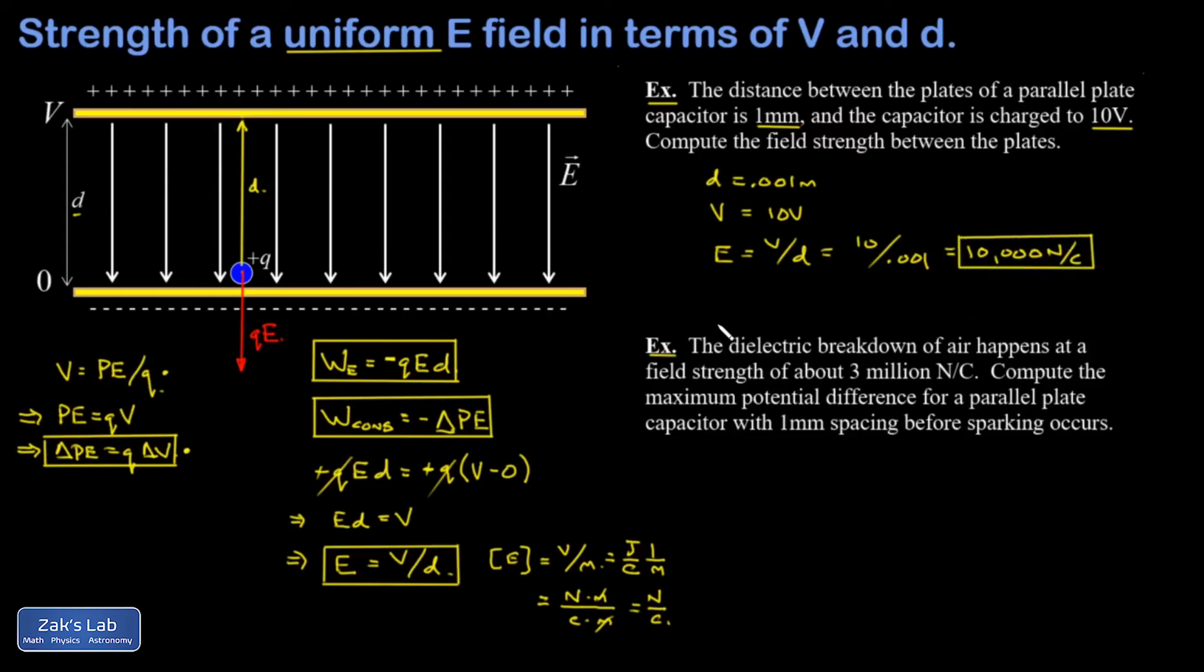The second problem turns the formula around, with interesting background. The dielectric breakdown of air happens at a field strength of about 3 million newtons per coulomb. This means if you subject air molecules to a high enough electric field, you can start ripping electrons off those molecules, creating a cascade of electrons flowing through the air. The air begins to conduct electricity - we call this a spark. At the 3 million newtons per coulomb threshold, a parallel plate capacitor would discharge across the plates with a spark.